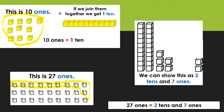Then counting again: one, two, three, four, five, six, seven, eight, nine, ten — that is two groups of ten. And then how many do I have left over? I have one, two, three, four, five, six, seven left over. So that means two tens and seven ones is the same as these 27 cubes.